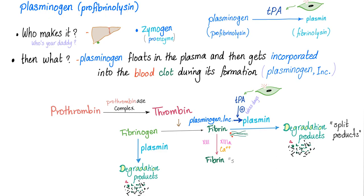Plasminogen, also known as profibrinolysin, which means plasmin is called fibrinolysin. Plasminogen is a zymogen — a proenzyme — made in the liver. It floats in the plasma and then gets incorporated into the blood clot, into the fibrin, during fibrin formation. This plasminogen, incorporated in the fibrin, is activated by TPA, which comes not from the smooth endothelium but from the injured, traumatized endothelium — which takes days.